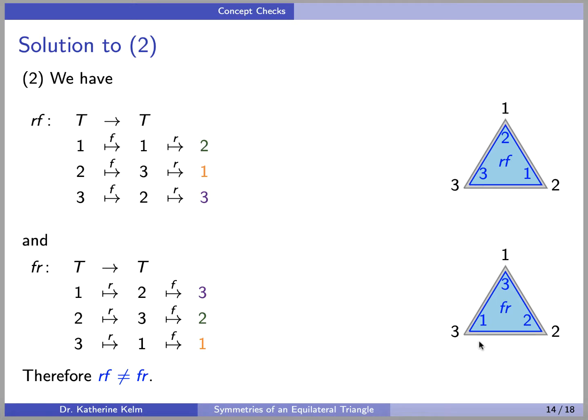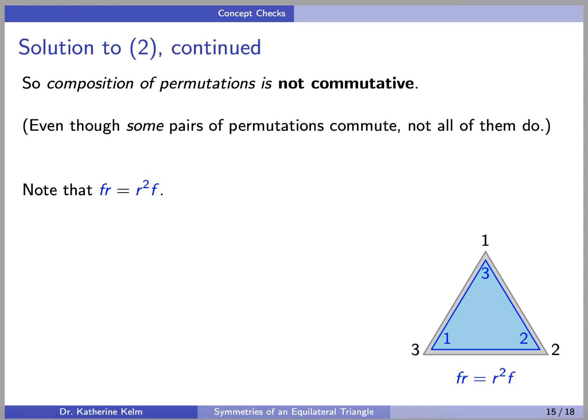So this is an operation that is not commutative. When we say composition of permutations is not commutative, what we really mean is that even though some pairs of permutations do commute, not all of them do.